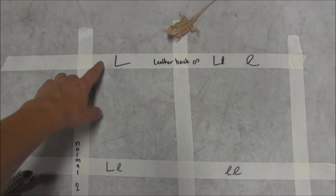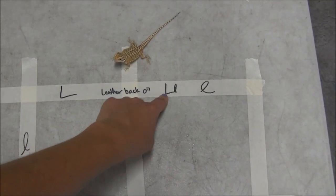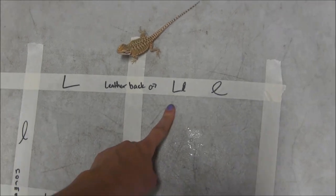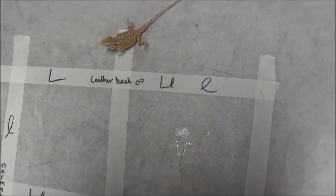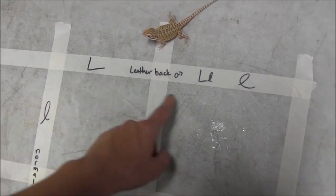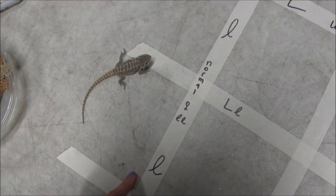And what you're going to do is you're going to take, you're going to split up your little formula saying what the genes are and put one in one column, one in the other. So, this is the leatherback, so he's got a capital L and his lowercase l. This is for the normal female, lowercase l, lowercase l.